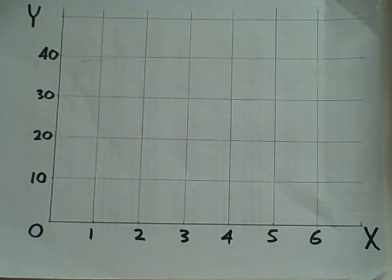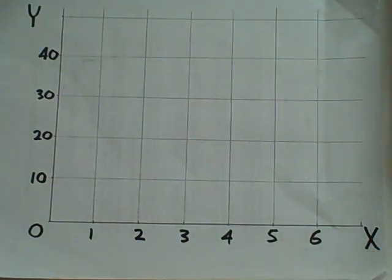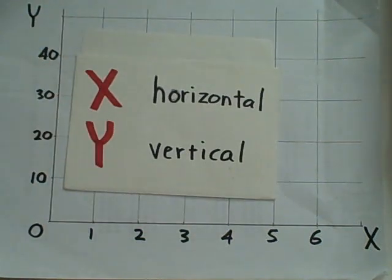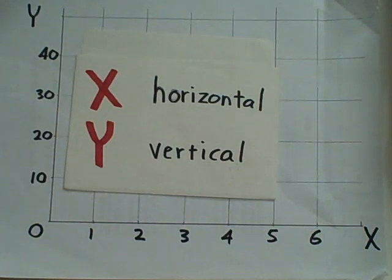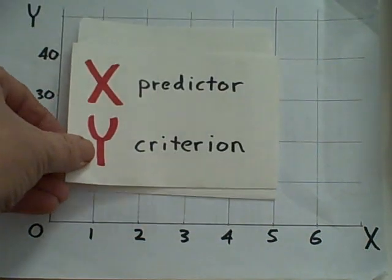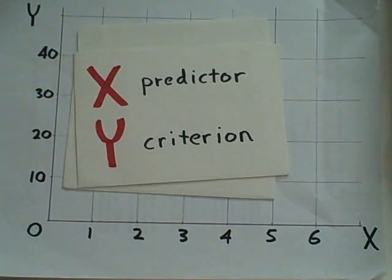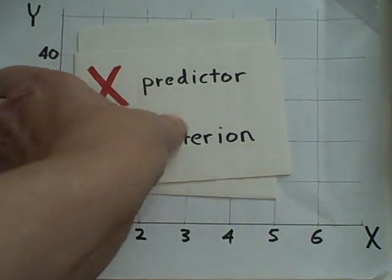The scatterplot has two axes — one for an x variable and one for a y variable. We put x as the horizontal axis and y as the vertical axis. If we have an independent variable, that's usually going to be x, and if we have a dependent variable, that's going to be y. If we're just using two dependent variables, x would be the predictor and y would be the criterion.